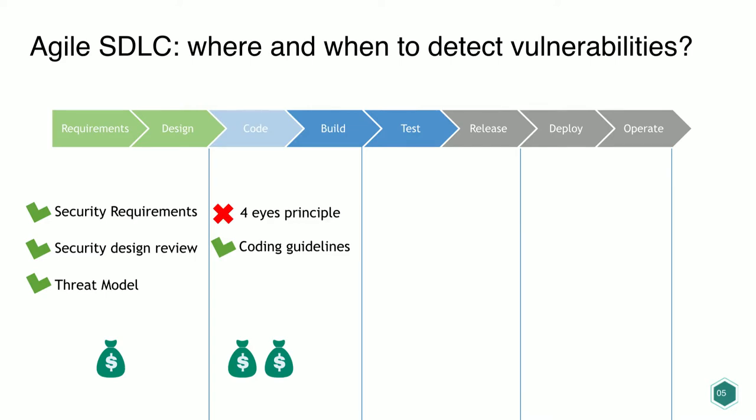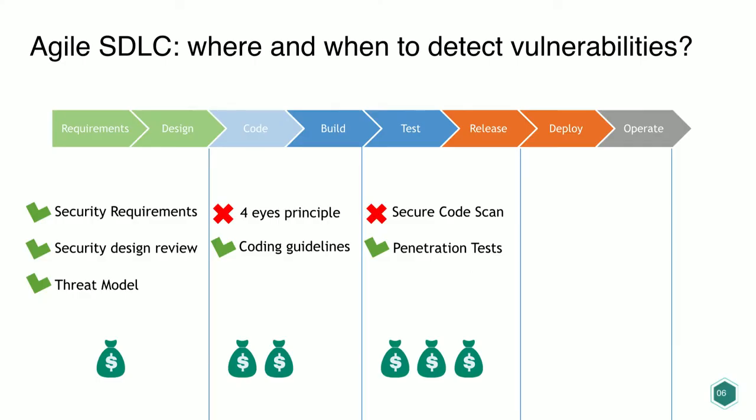For the Fortnite vulnerability, a static analysis tool might not detect the problem because it's not in the security requirements or threat model. But if you have coding guidelines, it would be easily detected since Google states it's not safe to use that permission. In the third phase, a secure code scan might raise a warning, but a penetration test would definitely detect the problem — at a much higher cost.